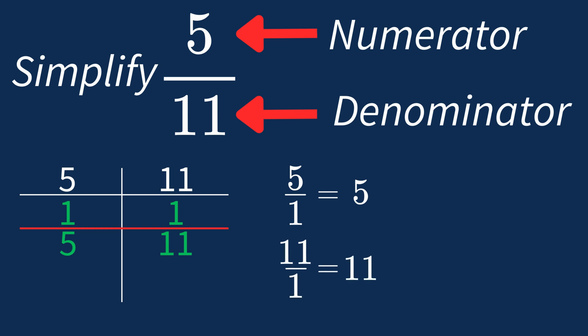So after dividing both the numerator and denominator by their greatest common factor of 1, we still end up with the same fraction, 5 over 11.